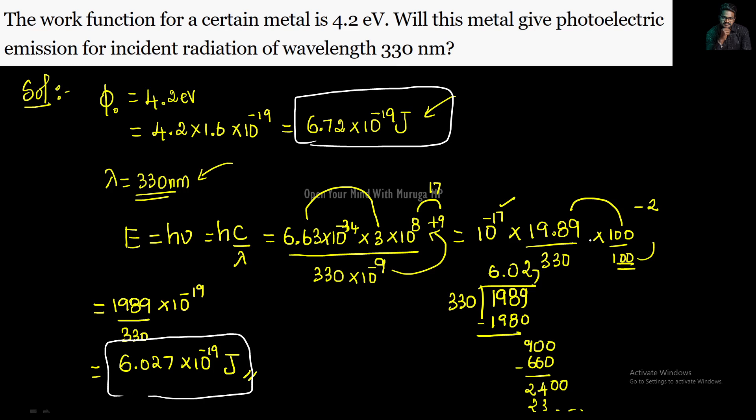Now, what is the work function? The work function is 6.72 times 10 to the power minus 19 joules. This wavelength's energy is 6.027 times 10 to the power minus 19 joules. Since the incident energy is less than the minimum energy required, photoelectric emission will not occur. Thank you.